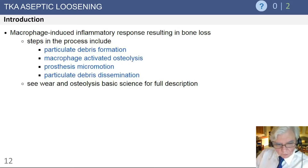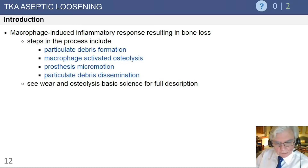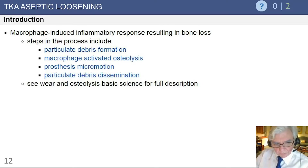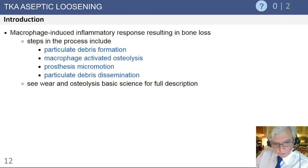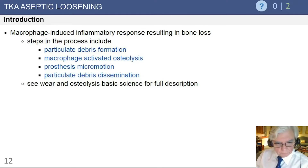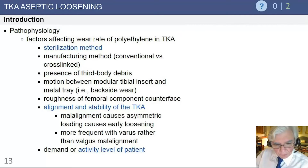A brief review of aseptic loosening: it is a macrophage-induced inflammatory response to wear debris, which activates the osteoclast. This debris and osteoclast activation leads to osteolysis, which can then lead to prosthetic micromotion and loosening, and eventually further particulate debris dissemination not only at the local interface but in more distant areas as well.